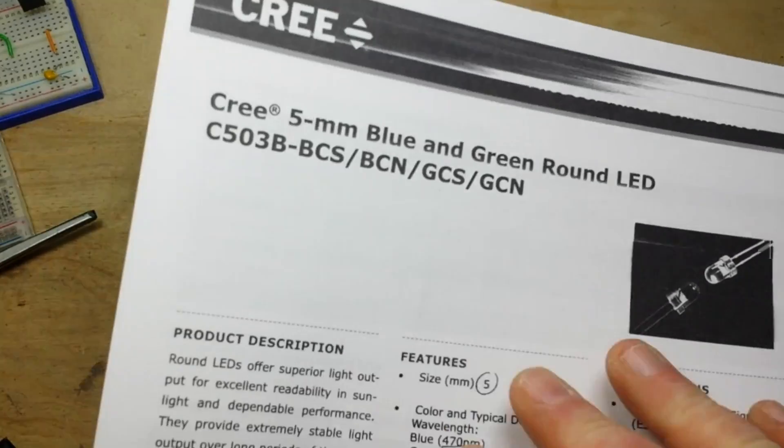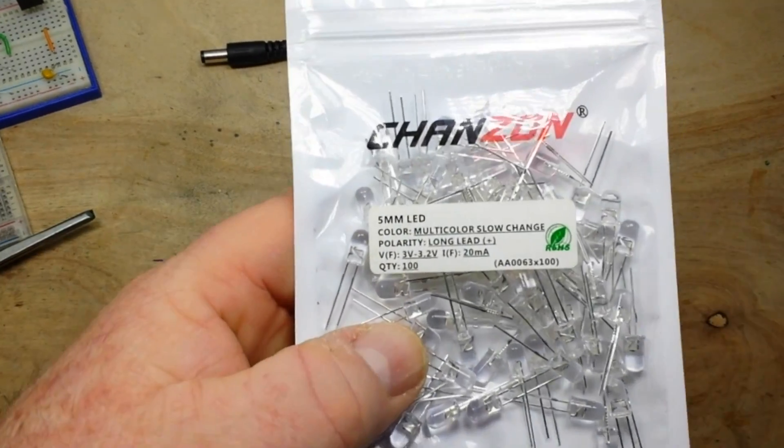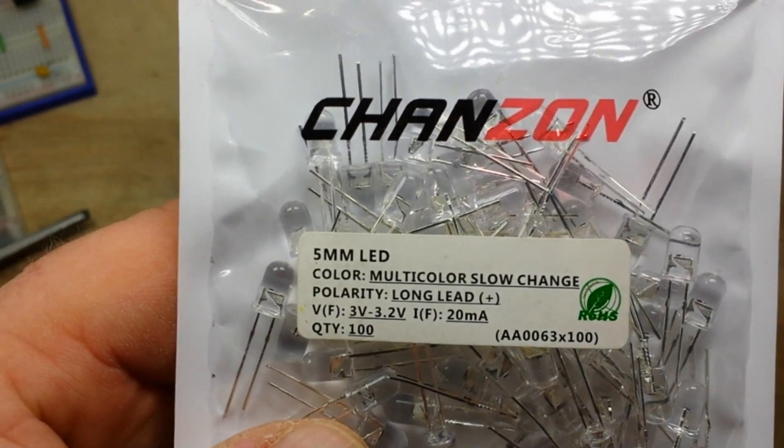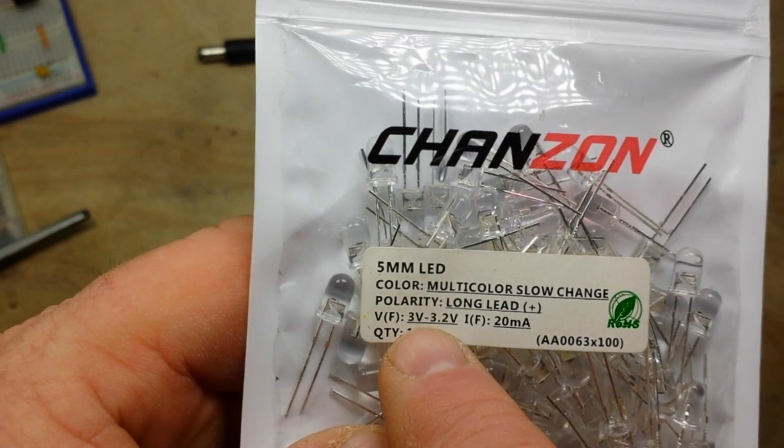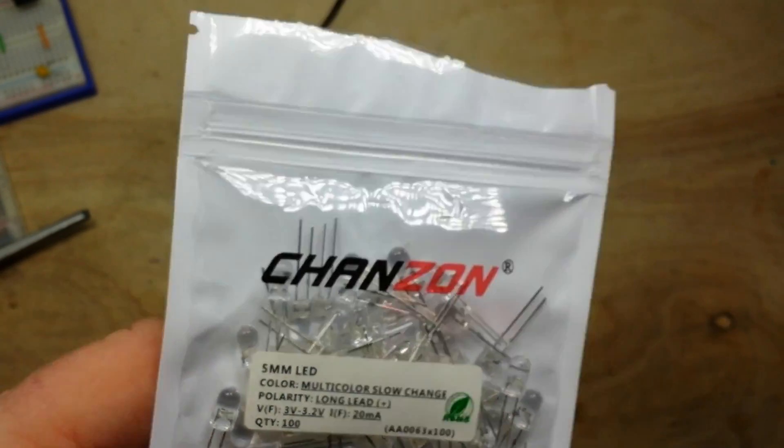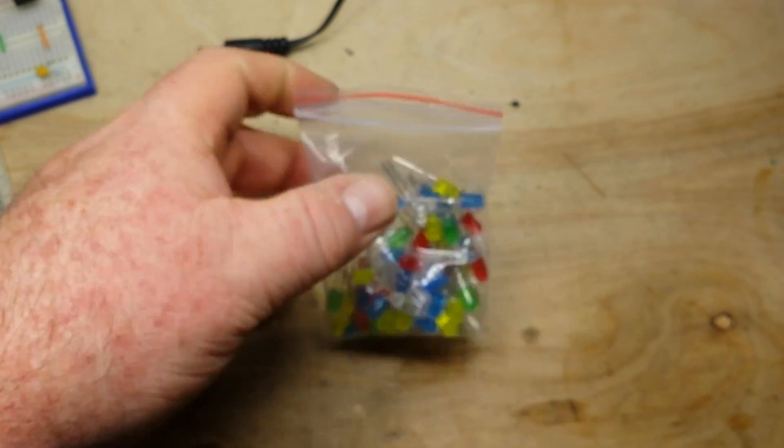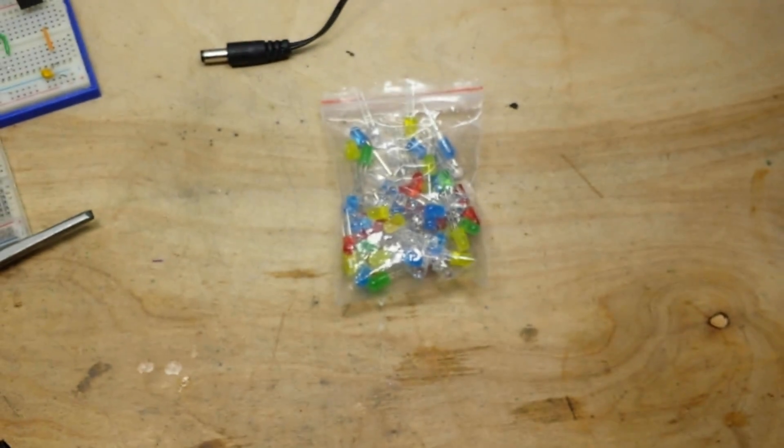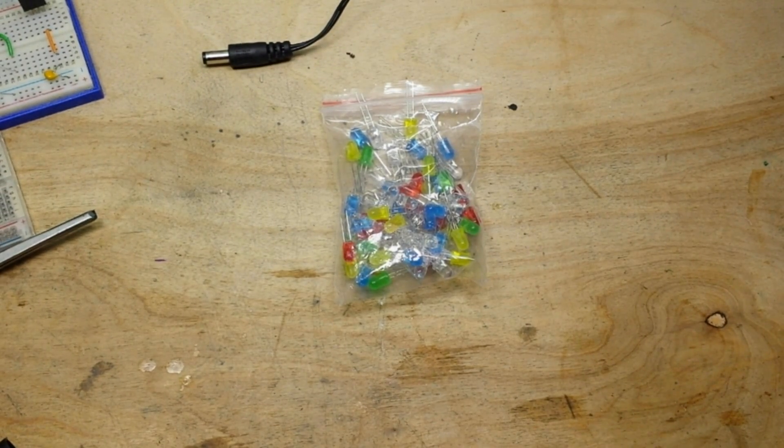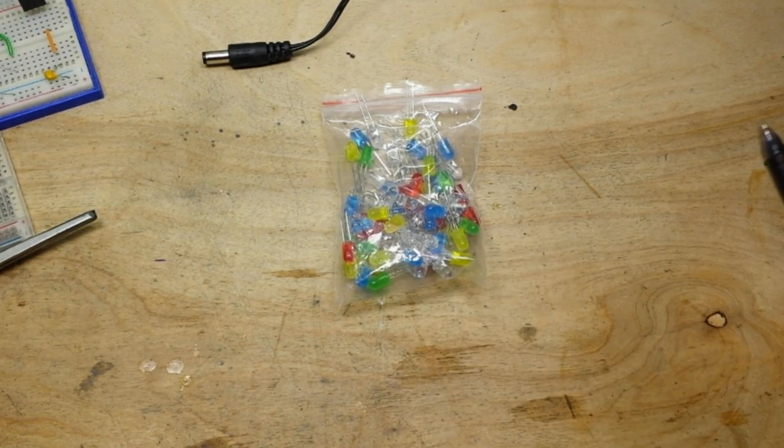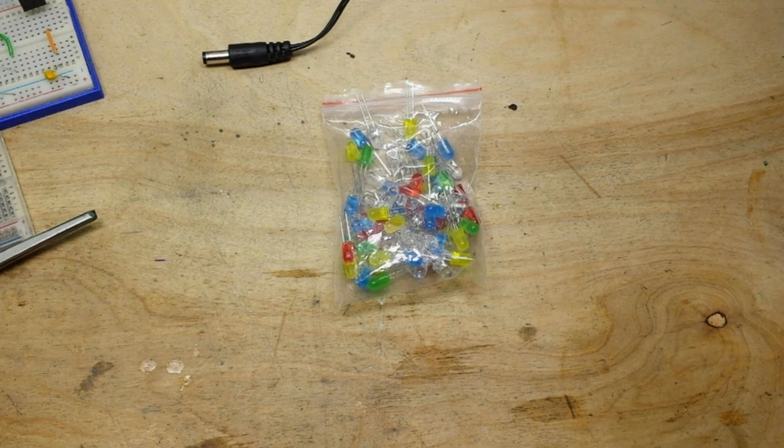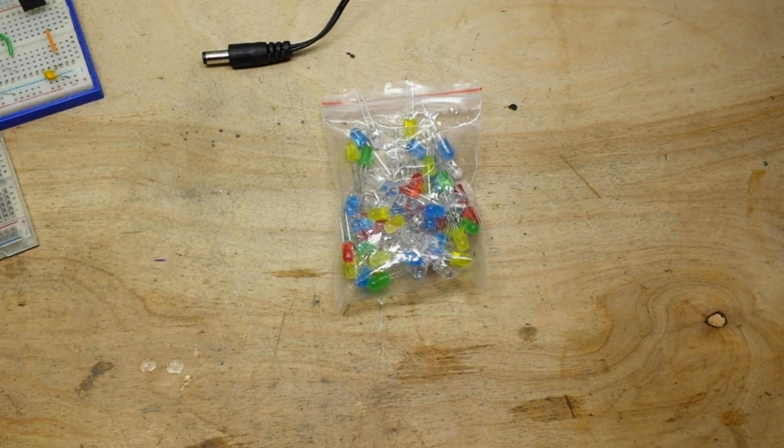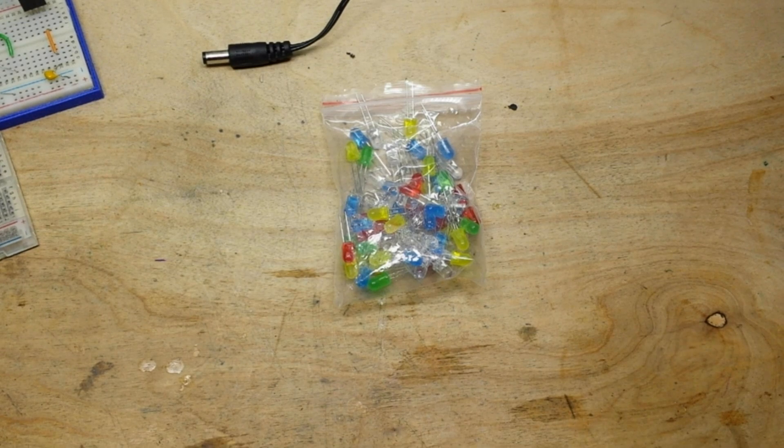When you have all the information, if you buy your LEDs from a reputable place, then you get that information. Now, sometimes, if you buy LEDs from somewhere off the internet like eBay, you can get the information. But, most of the time, what you're going to end up with is a bag of blank LEDs. That's what you're going to get for your $2 for 100 LEDs. So, how are we going to figure out what we're going to do? Well, it's not that hard.